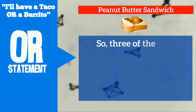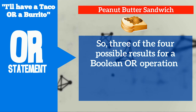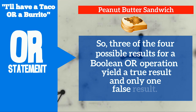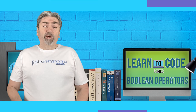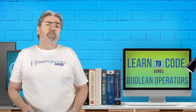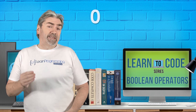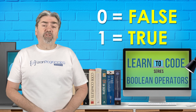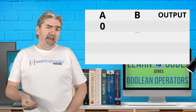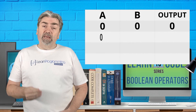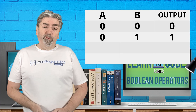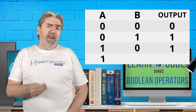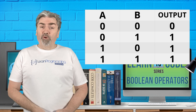Three of the four possible results for a Boolean OR operation yield a true result, and only one is a false result. Referring to the figure's OR operation: 0 OR 0 yields false, 0 OR 1 yields true, 1 OR 0 yields true, and 1 OR 1 also yields a true result.